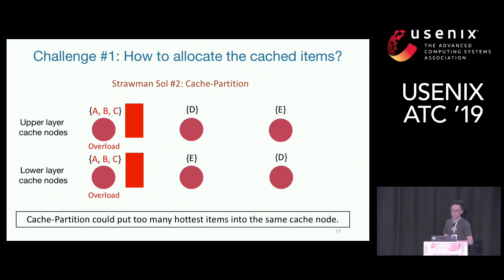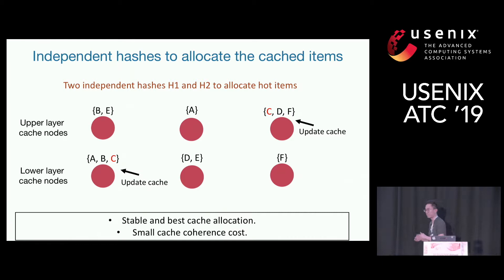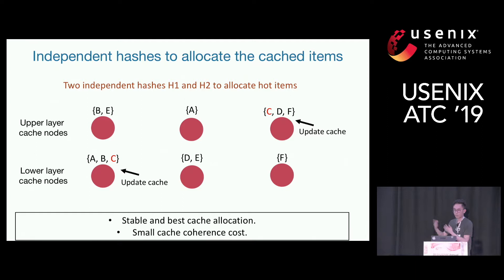What we do instead is quite simple but effective: we use two independent hash functions to allocate hot items. We have H1 and H2. In the upper-layer cache nodes we use H1, which hashes items A, B, C, D, E into a particular order — say C, D, F get cached into the same cache node. But in the lower layer, we use another independent hash function, so with high probability C, D, E will be spread out and not hashed to the same node again. So if C, D, F are hot items in the upper layer, you get more help from the lower layer, which spreads out the cache loads. We show this provides stable and optimal cache allocation, and the coherence cost is minimal — one copy per layer — much smaller than full replication.